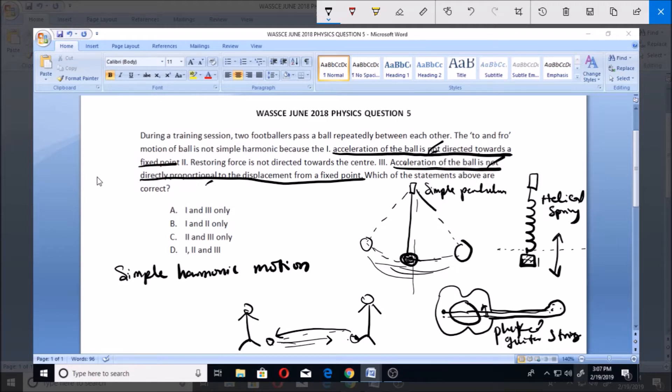Because it's not even a confirmed straight line movement. And you cannot say that the acceleration of the ball is directly proportional to the displacement from a fixed point. There is no considerable fixed point where you can say that the acceleration is proportional to the displacement.